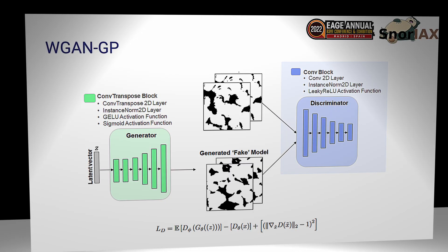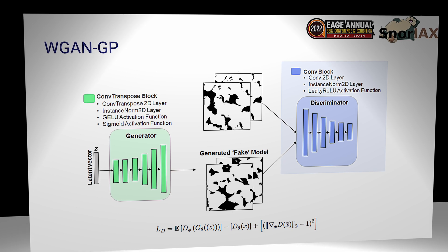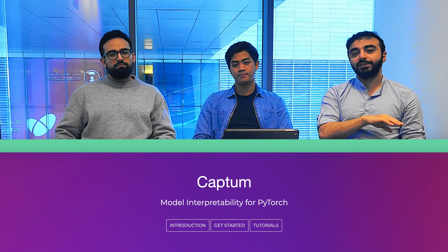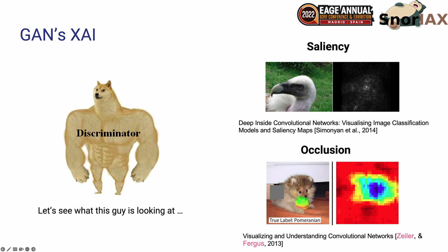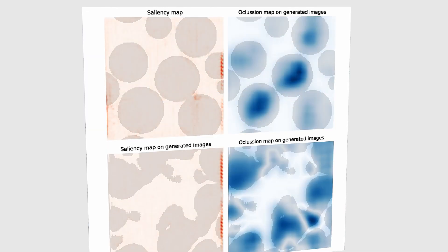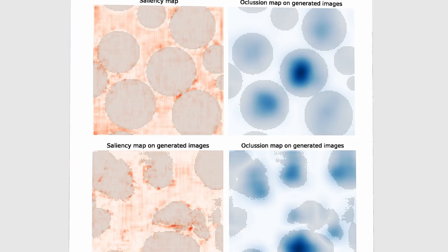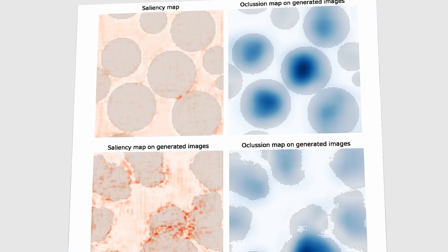Let's start with the first problem — porous media generation. We focused on the discriminator and wanted to learn what it learns. We used post-hoc methods, applied to an already trained model, using the Captum library built in PyTorch, which has many such methods. We applied saliency maps and occlusion maps. Surprisingly, the two methods learn something contradicting: the saliency map focuses on the background rather than the pores, while the occlusion map focuses on the roundness of the pores.